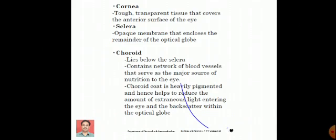The second membrane is called choroid. It lies just below the sclera and contains a large network of blood vessels by means of which nutrition is supplied to the human eye.